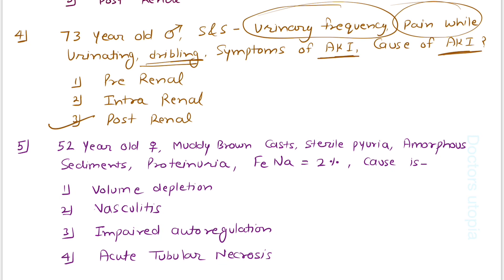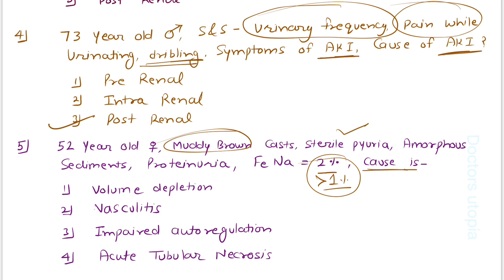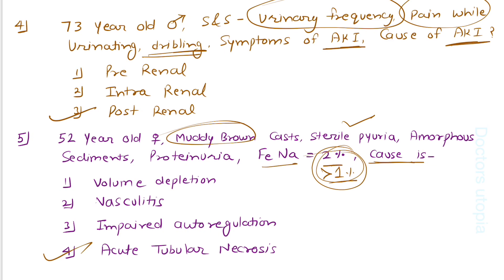Fifth question: a 52-year-old female has muddy brown casts, sterile pyuria, amorphous sediments, proteinuria, and a fractional excretion of sodium of 2% — which is more than 1%. What is the cause? Muddy brown casts, amorphous sediments, proteinuria, and a FENa greater than 1% are all indicative of acute tubular necrosis, an intrinsic renal cause.